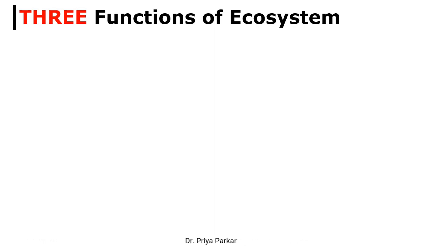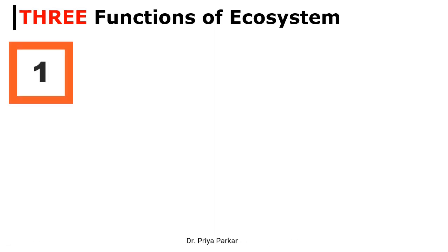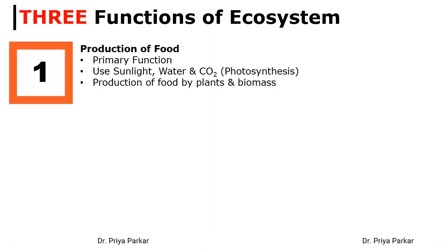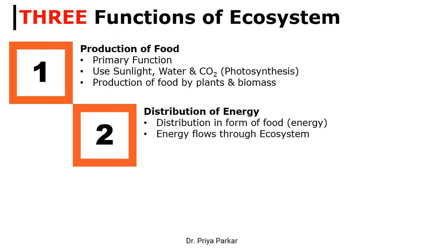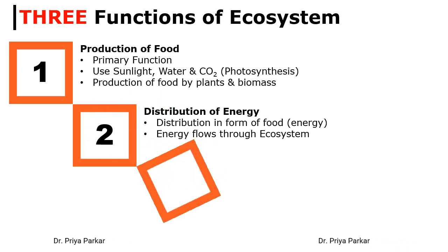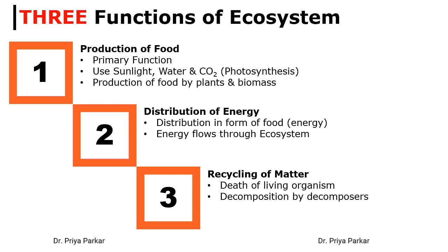Broadly, there are three types of functions of any ecosystem: production of food, which is the primary function; energy flow, which is the secondary function; and recycling of matter, which is the third and final function. We will cover each of these in detail now.